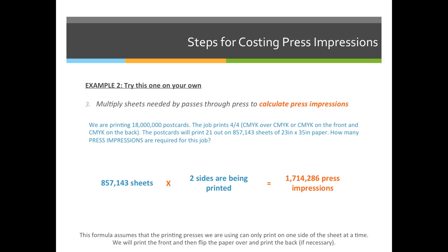There are five steps for costing press impressions. Make sure you write them down and include them on your cheat sheet for exam number three. Step one is to calculate the number out on a sheet. We use this for step two to calculate the total number of sheets required for a printing job. We complete steps one and two because we need to know the total number of sheets. If the question on the homework or quiz gives you the total number of sheets, you can skip steps one and two.